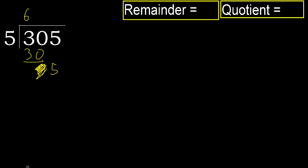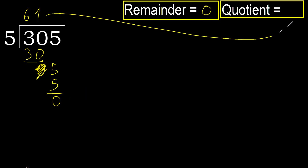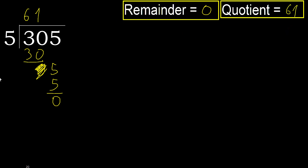5 multiplied by 2 is 10, which is greater. Multiply by 1 is 5 — it is not greater. 5 minus 5 is 0. Next, that is no remainder, therefore finish it. 305 divided by 5 equals 61.